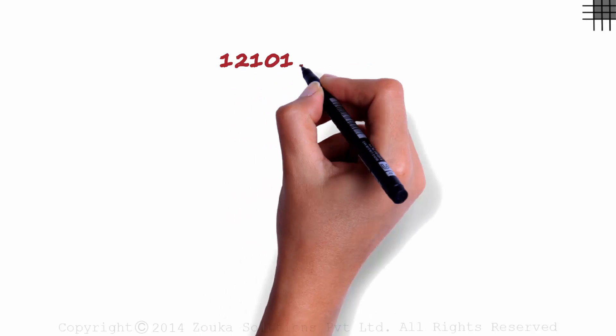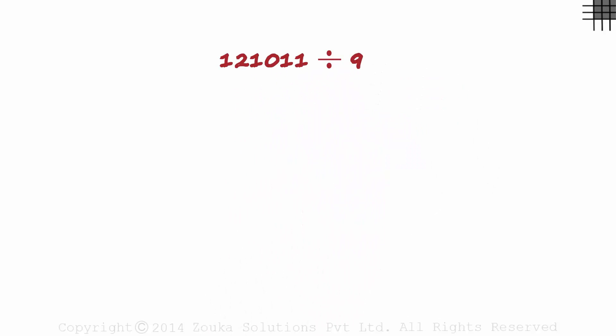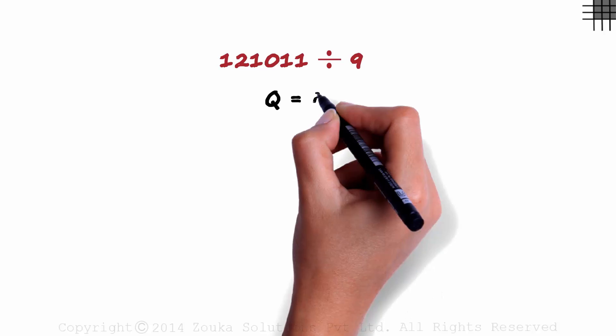121,011 divided by 9. Pause the video and find the quotient and the remainder.